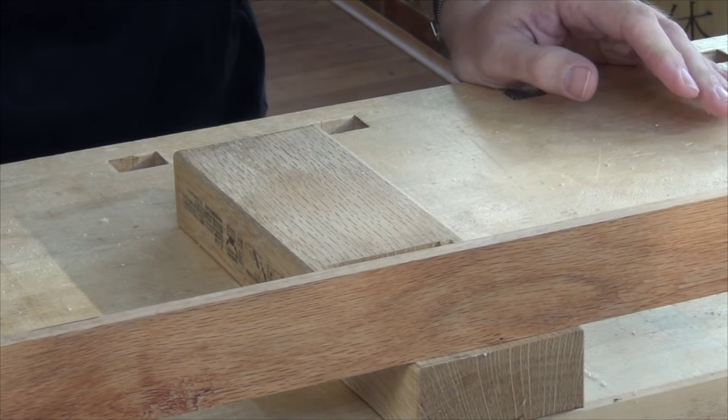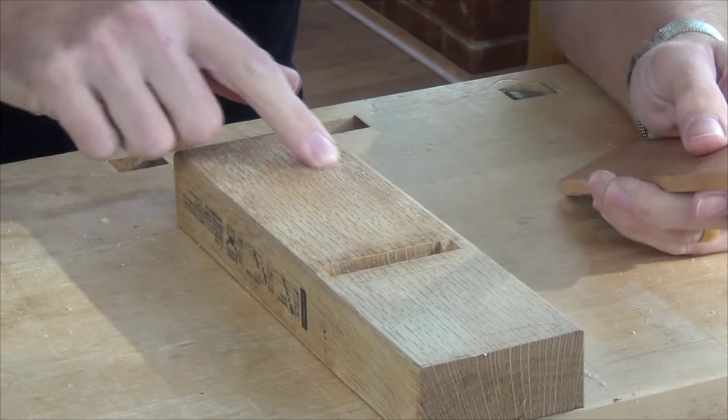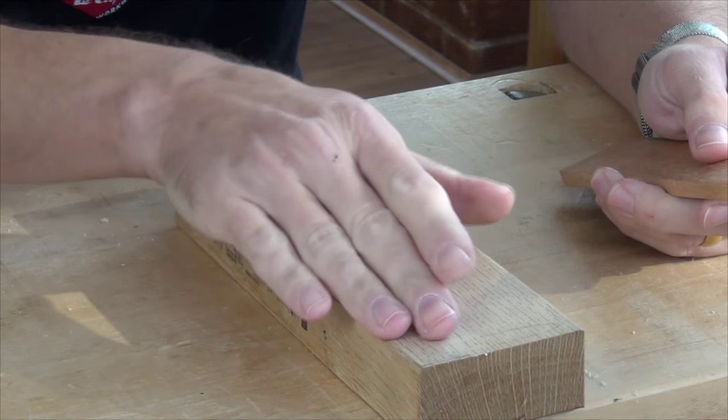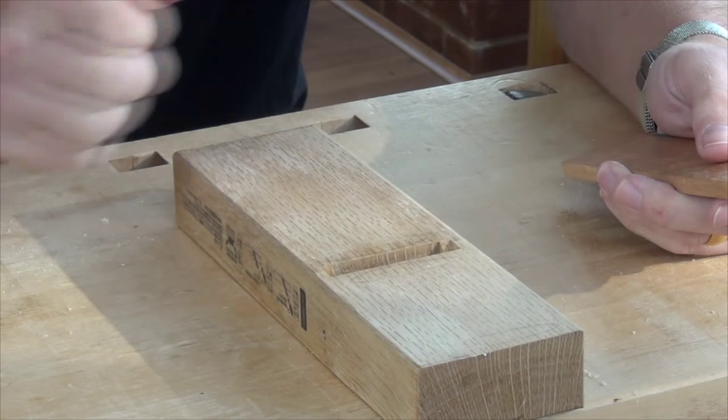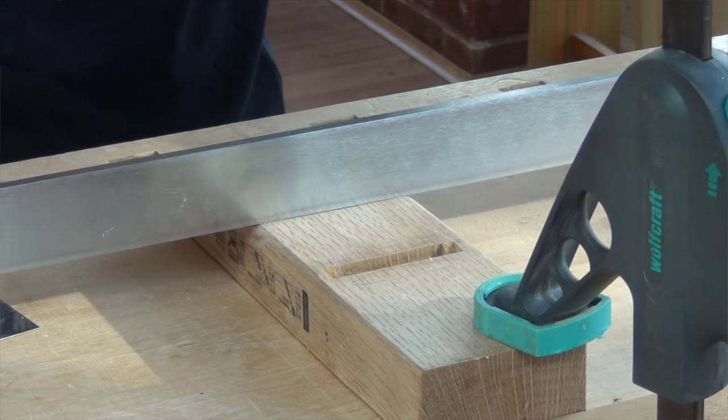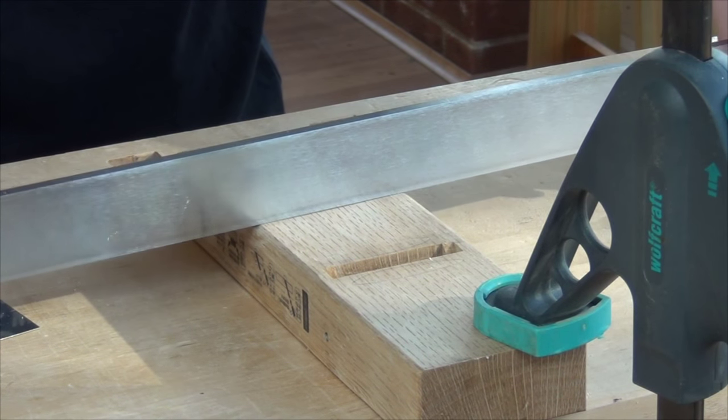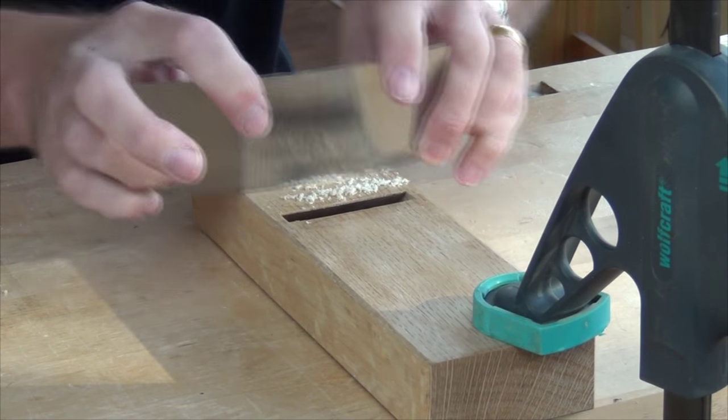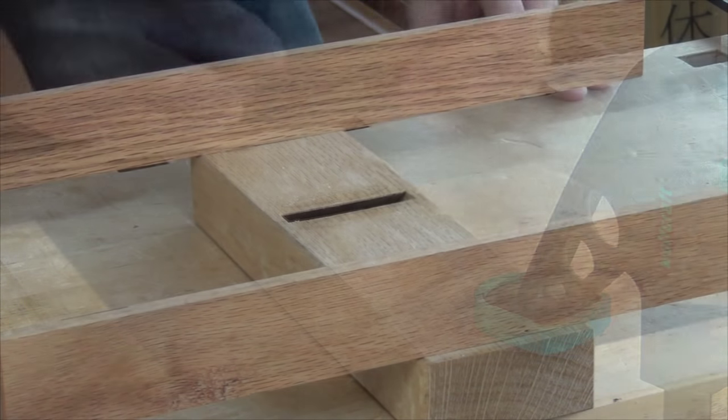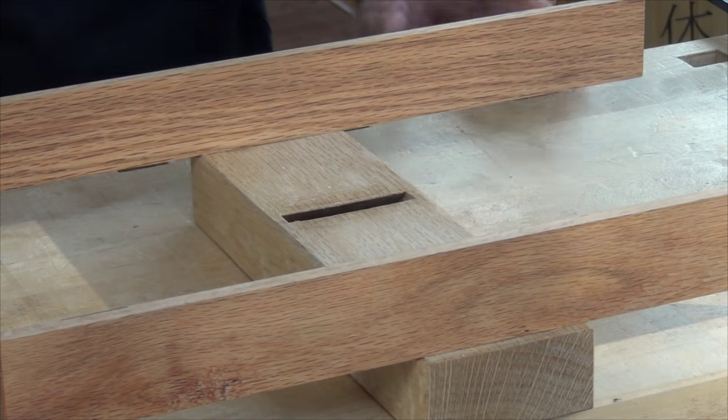That's getting very close now. The other thing I want to do is, because I'm just taking away from these corners, I could end up with a slightly convex shape on the sole. So I need to make sure I keep that straight. And that's perfect. We've taken all the wind out.